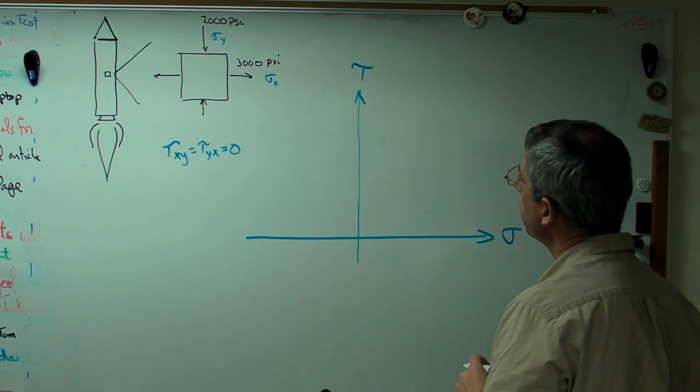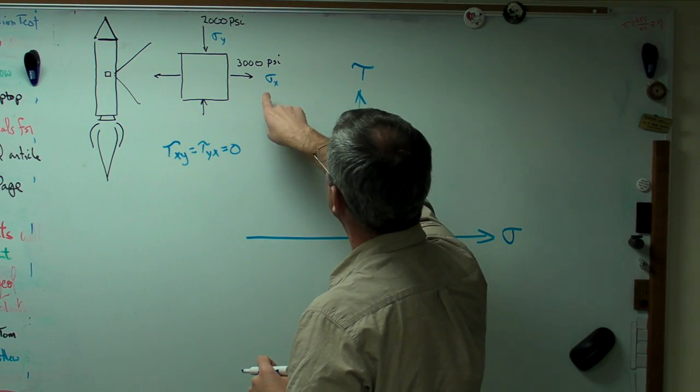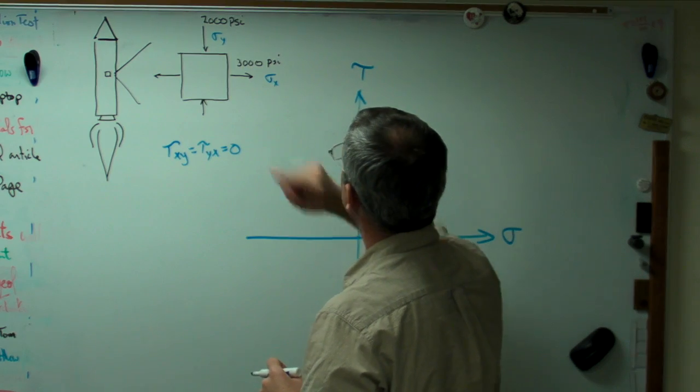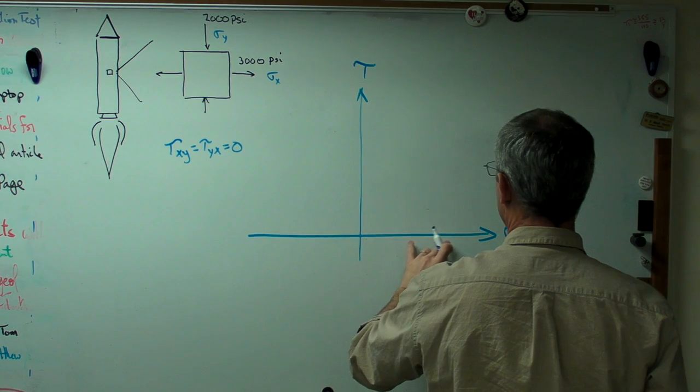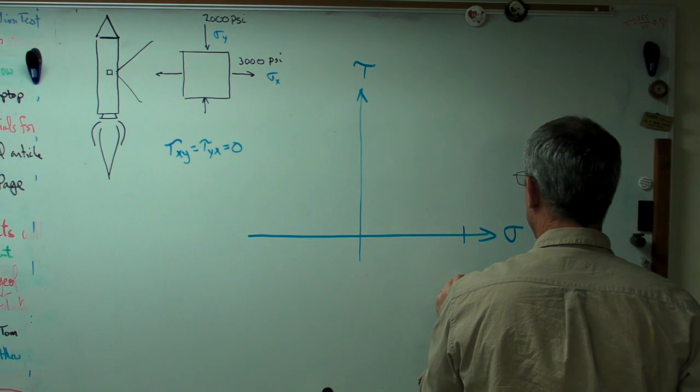So what you do is you basically plot two points here. We plot tau xy, sigma x. So sigma x right here is 3,000 psi. I'm going to call that about 3,000 right there.